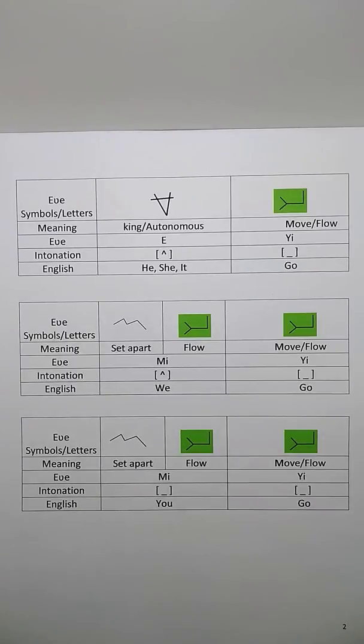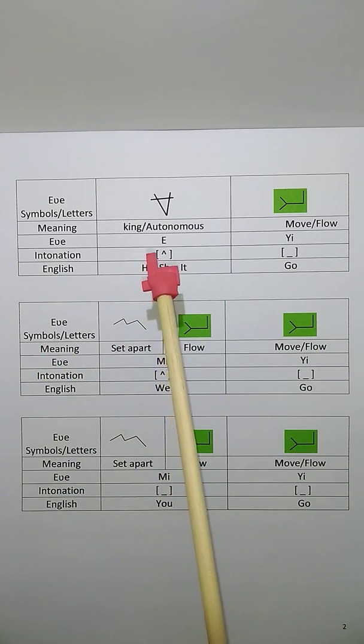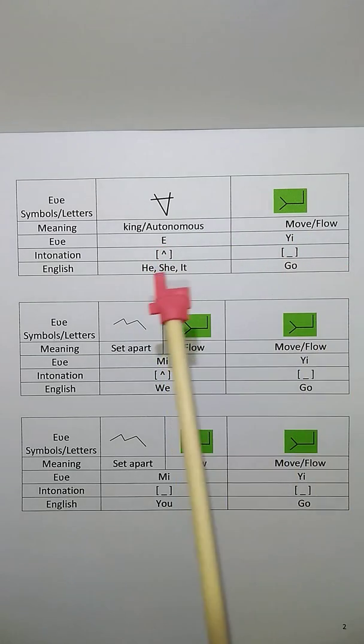And how do you say he or she or its goes in ancient Hebrew? It is e ye. E ye, she goes.